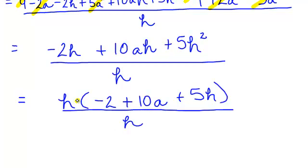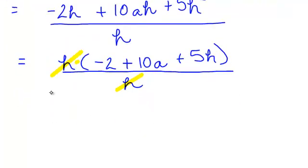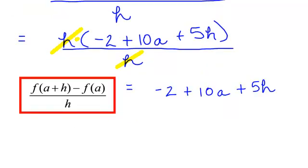So, we do have h times this trinomial divided by h. I can cancel these h's. My answer is negative 2 plus 10a plus 5h. You can write that in any order as long as you keep the appropriate signs. This is our difference quotient for the function f of x is equal to 9 minus 2x plus 5x squared.